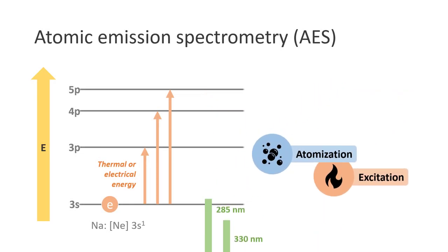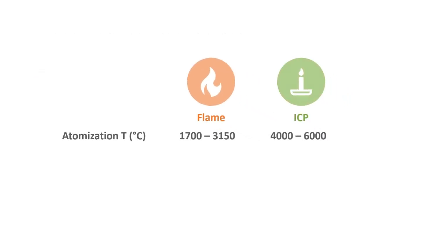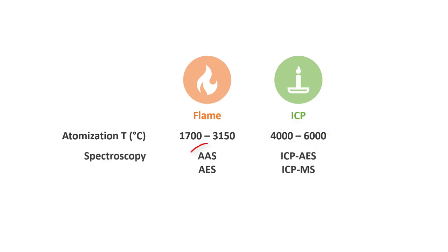In AES, the atomization and excitations can be achieved using either flame or inductively coupled plasma. Then the next question would be, which of these atomization methods is better? The typical atomization temperature using flame is around 1700 to 3100 degrees Celsius, depending on the fuel and oxidant we use, while the atomization temperature using ICP is around 4000 to 6000 degrees Celsius.